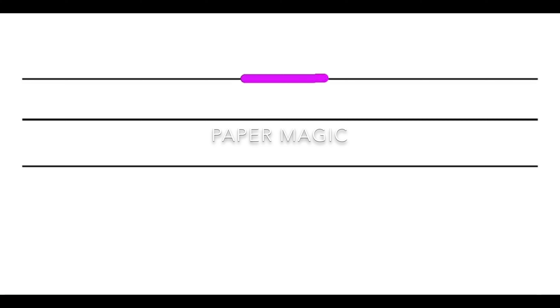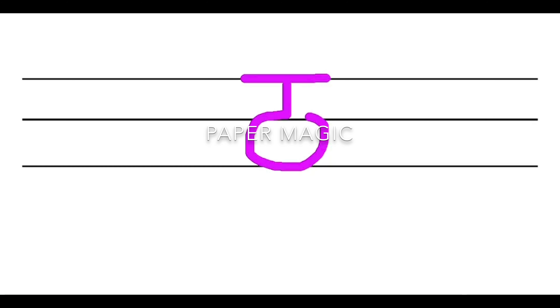Let us revise it on a three-line sheet. First, draw a sleeping line. From the middle of the sleeping line, draw a small standing line. And from the standing line, draw an English capital letter O shape or a circle like this.